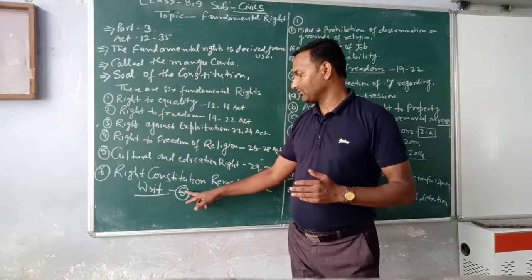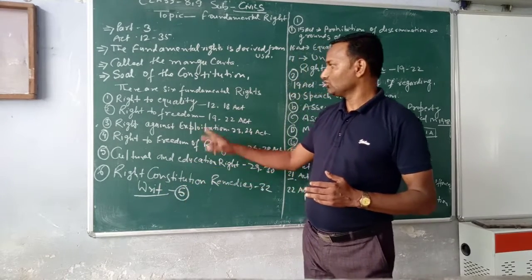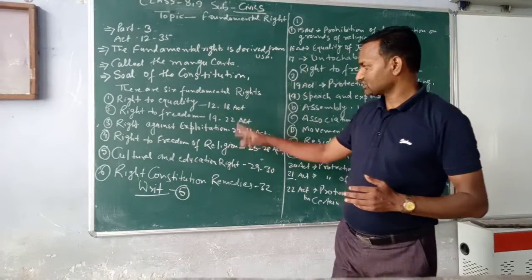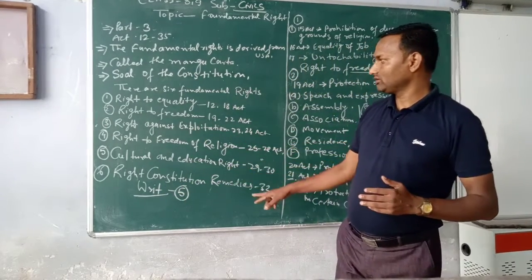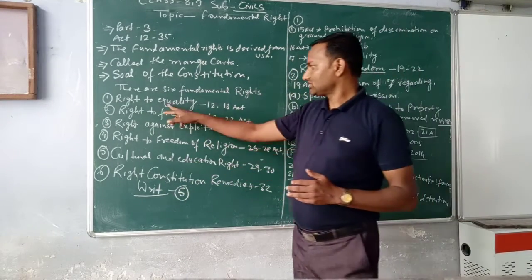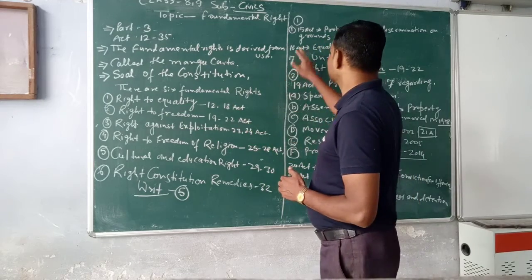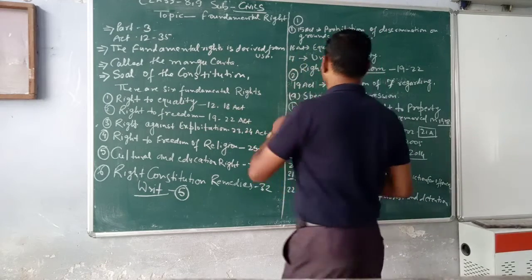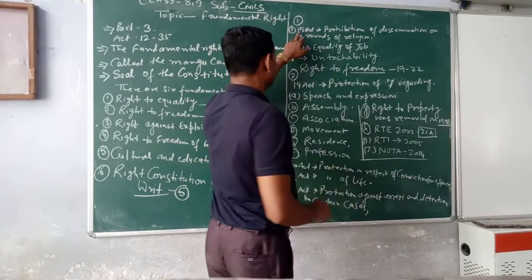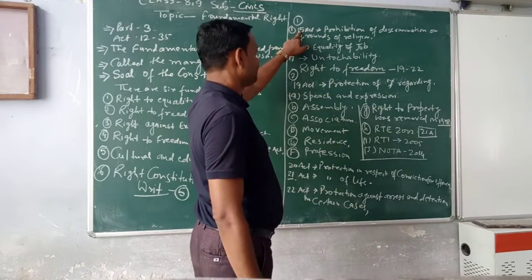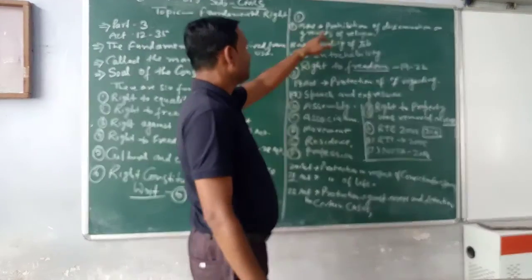There are five types of writs. I will discuss them one by one. First, Right to Equality — Samata Ka Adhikar — Article 14 and 15.